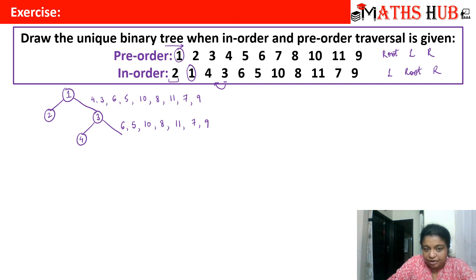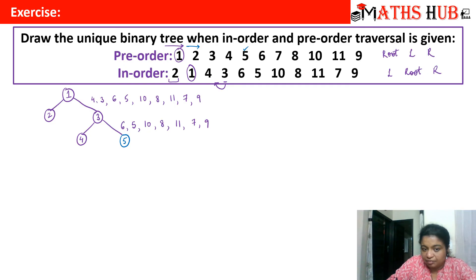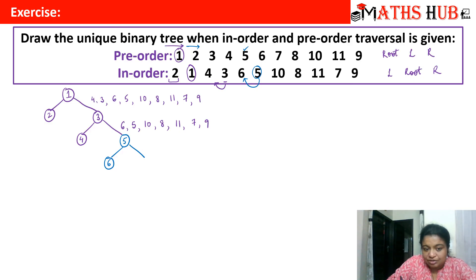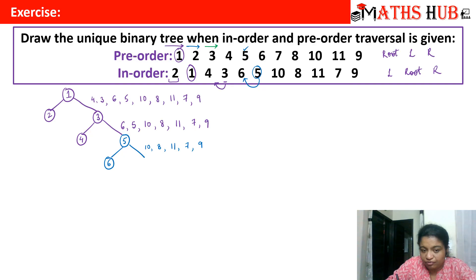We go back to pre-order and check which of the remaining vertices — 6, 5, 10, 8, 11, 7, 9 — appears first. 5 appears first, so 5 is the next root. We come back to in-order and locate 5: 6 lies towards the left of 5, so 6 is in the left subtree. The rest — 10, 8, 11, 7, and 9 — are on the right side.